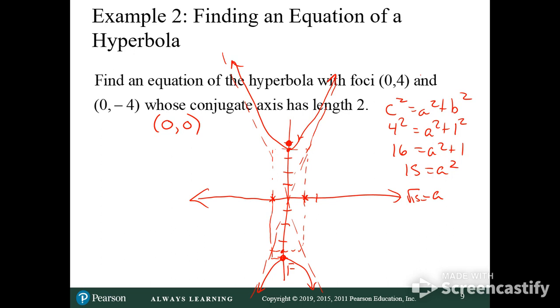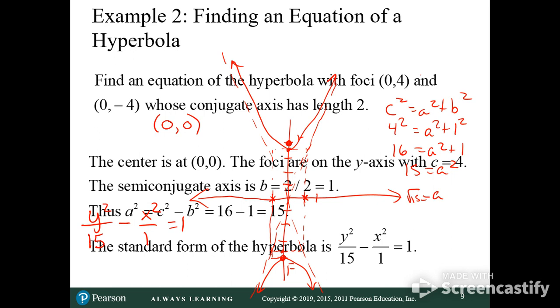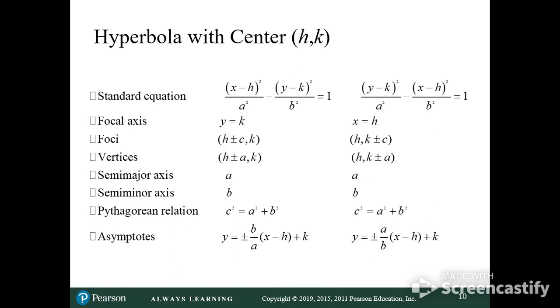So what's the equation? Well if it's an up down, y squared is positive, and we go the square root of 15 squared is a, minus x squared over 1 squared is 1, equals 1. Let's see if I'm right. Hey look at that, I'm right again.